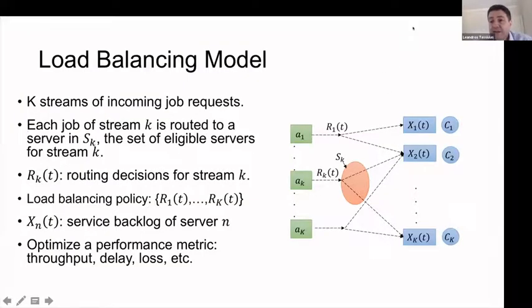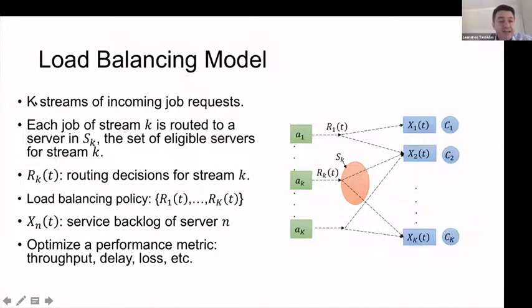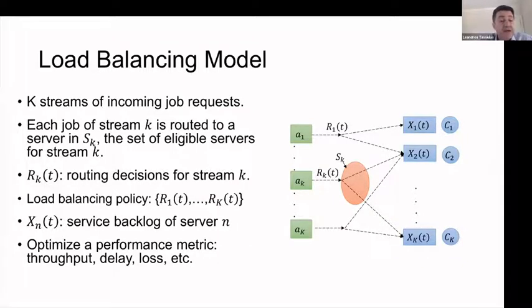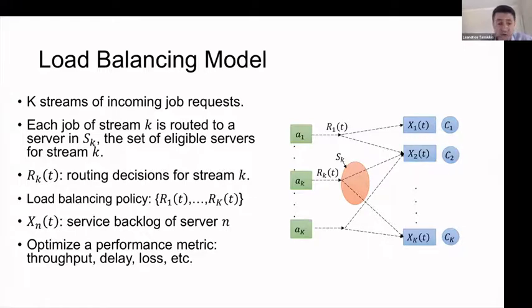The basic model we'll see throughout the presentation is presented here. In this model, we have N servers and a number of streams of incoming job requests. Each job of a stream K may be routed to a specific subset of servers, which can be arbitrary and specific for each stream K. The router — the dispatcher — needs to make routing decisions, that is, which of the eligible servers each job of the stream will be directed to. The load balancing policy is the collection of these decision mechanisms for all the arriving streams.